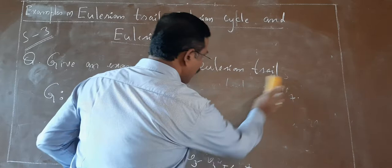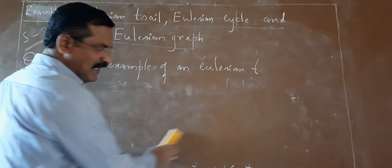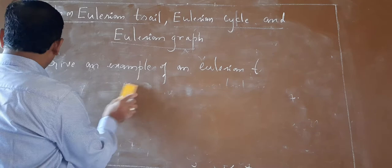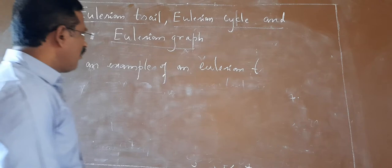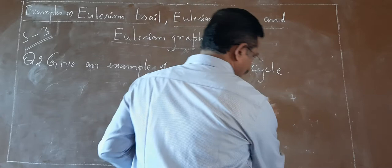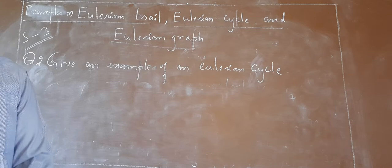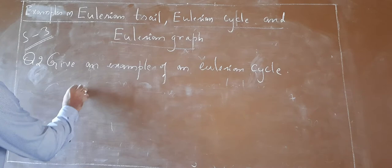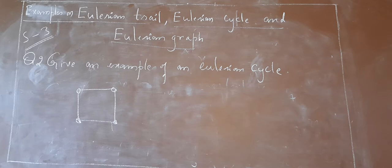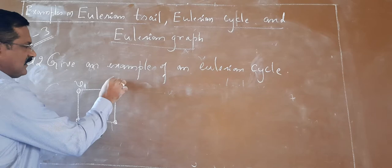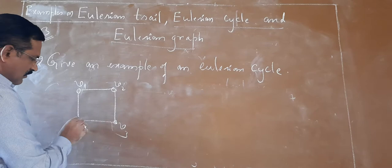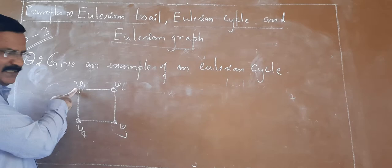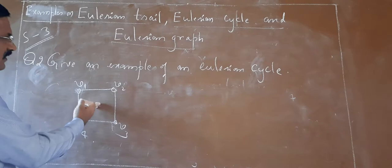Now consider another example for Eulerian cycle. The second question: give an example of an Eulerian cycle. You can give an example according to your choice. Let me consider one example. This is an Eulerian cycle because we start at V1, then reach V2, then V3 — there is no repetition of any edge — then V4, then back to V1. Starting and ending point are same.